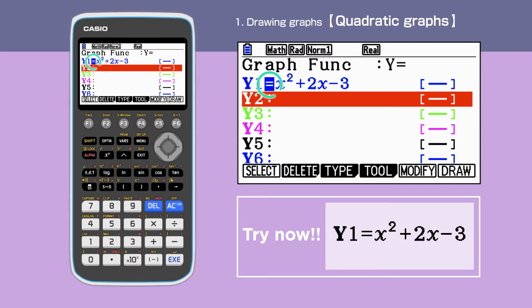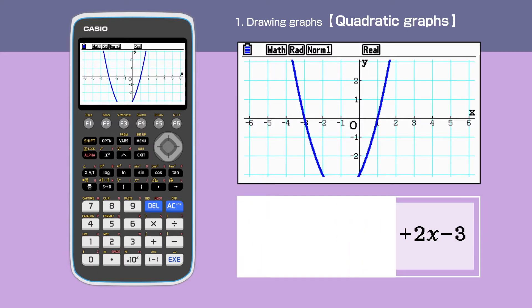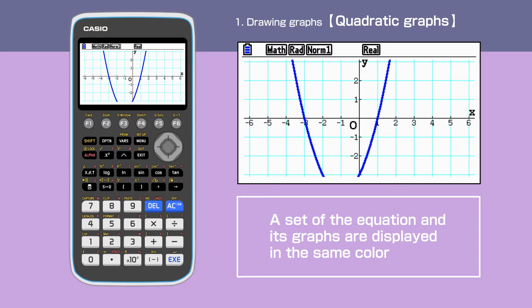After pressing the Enter key, the equals sign will be highlighted. This means the calculator is going to draw a graph of this function. Press F6 to draw the graph. The graph of quadratic is now shown on the display.